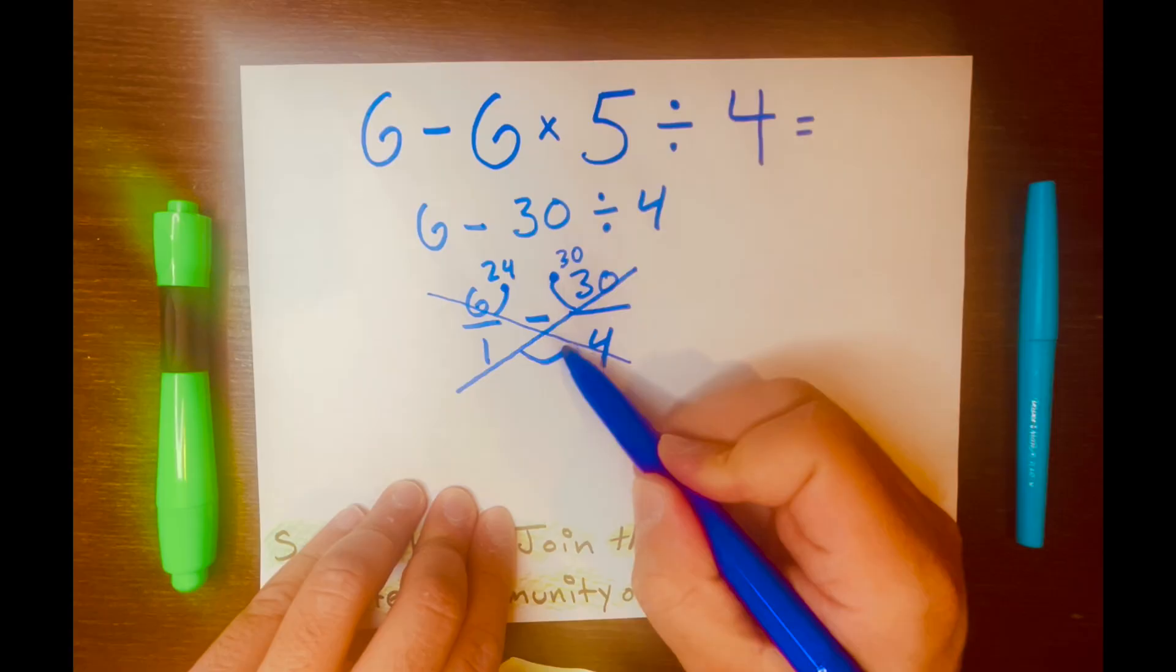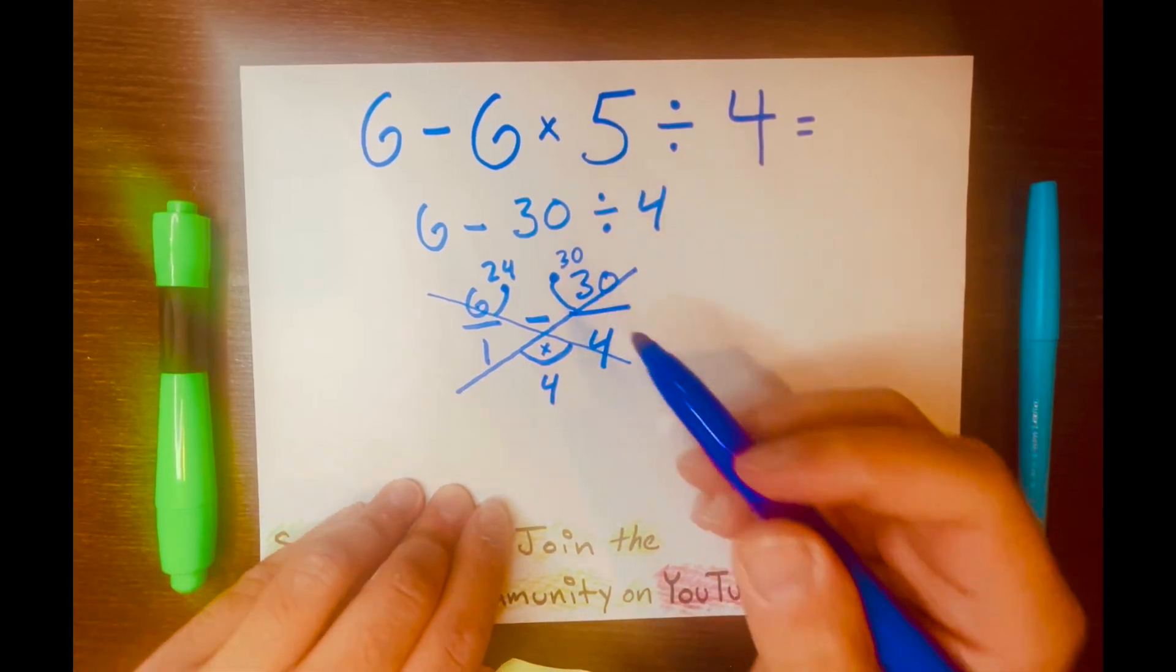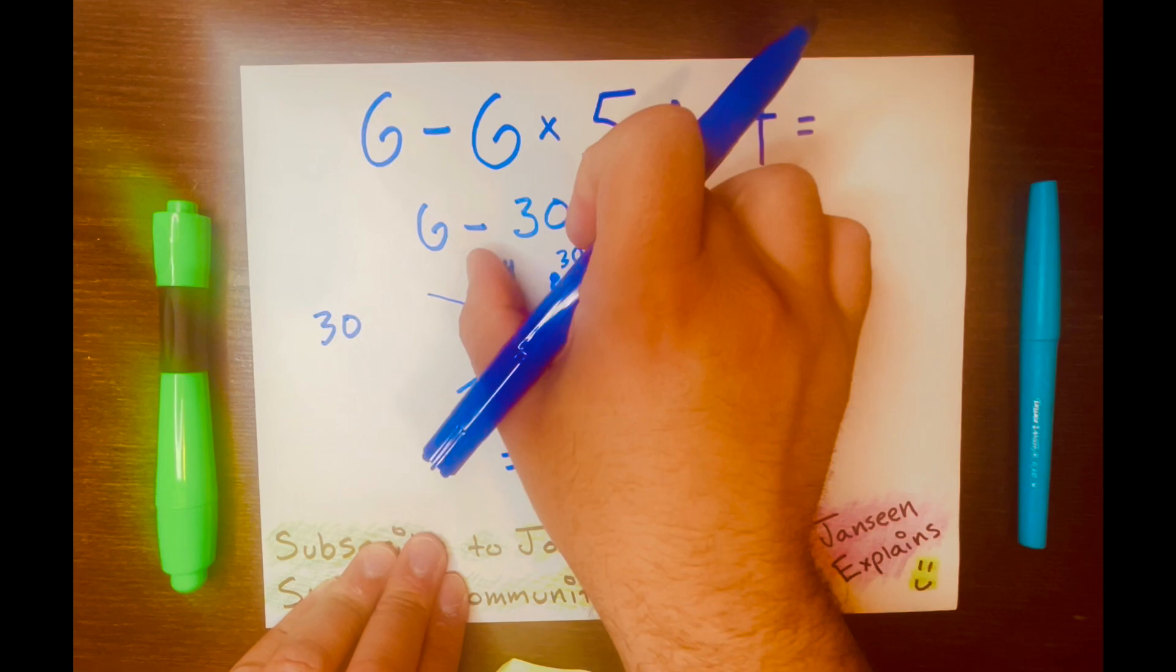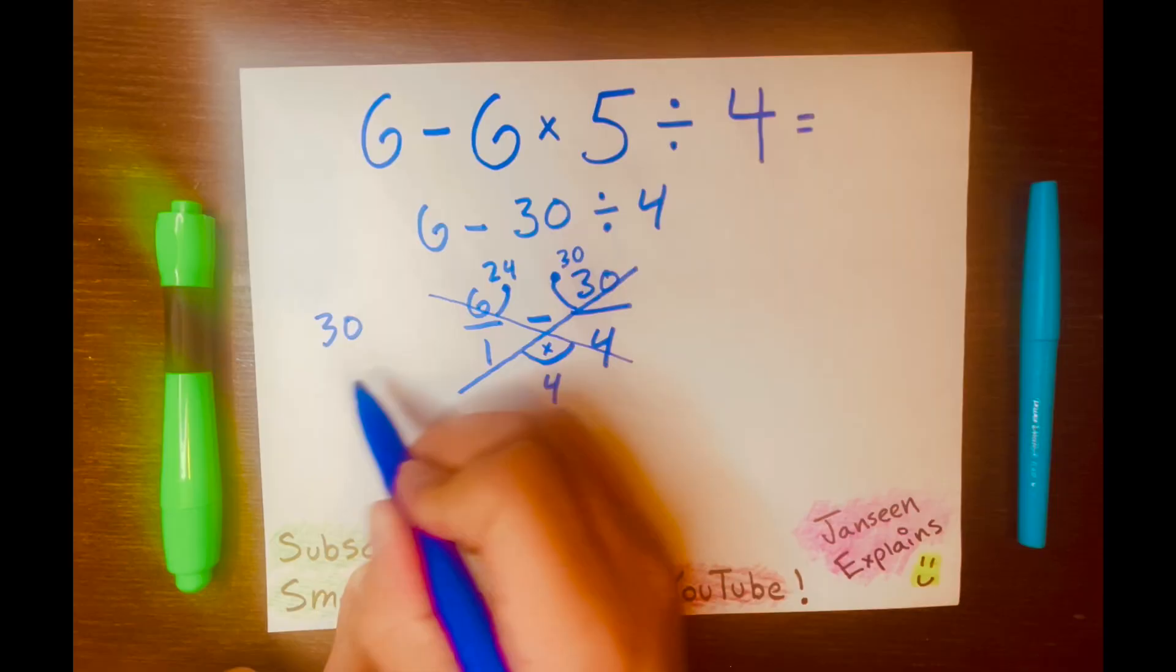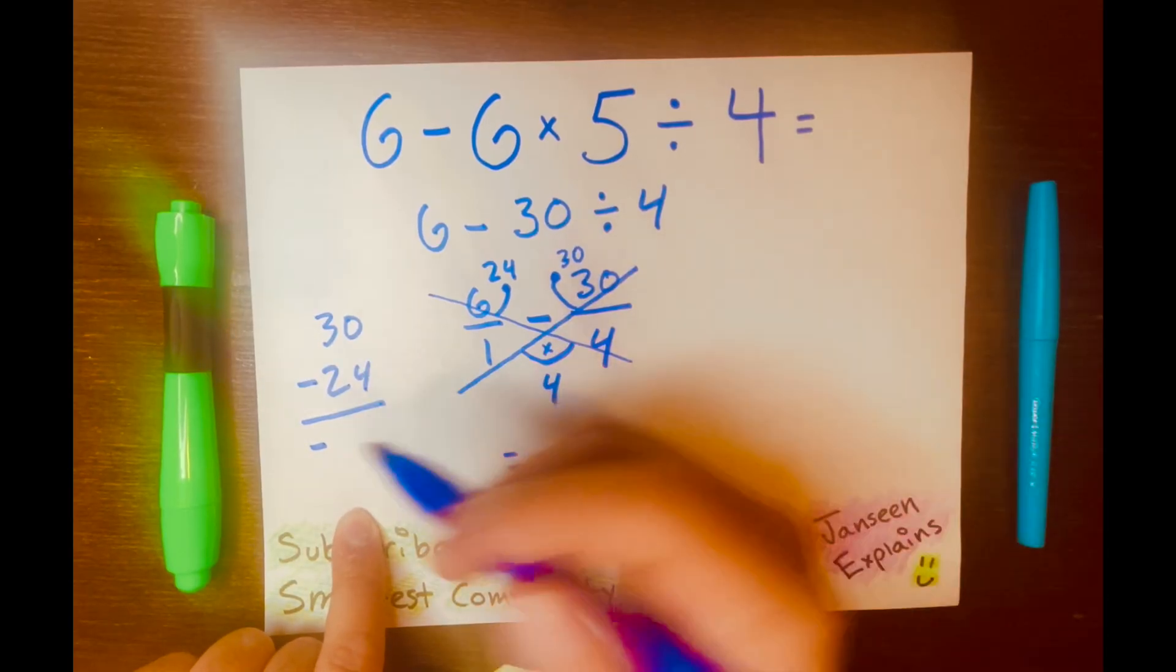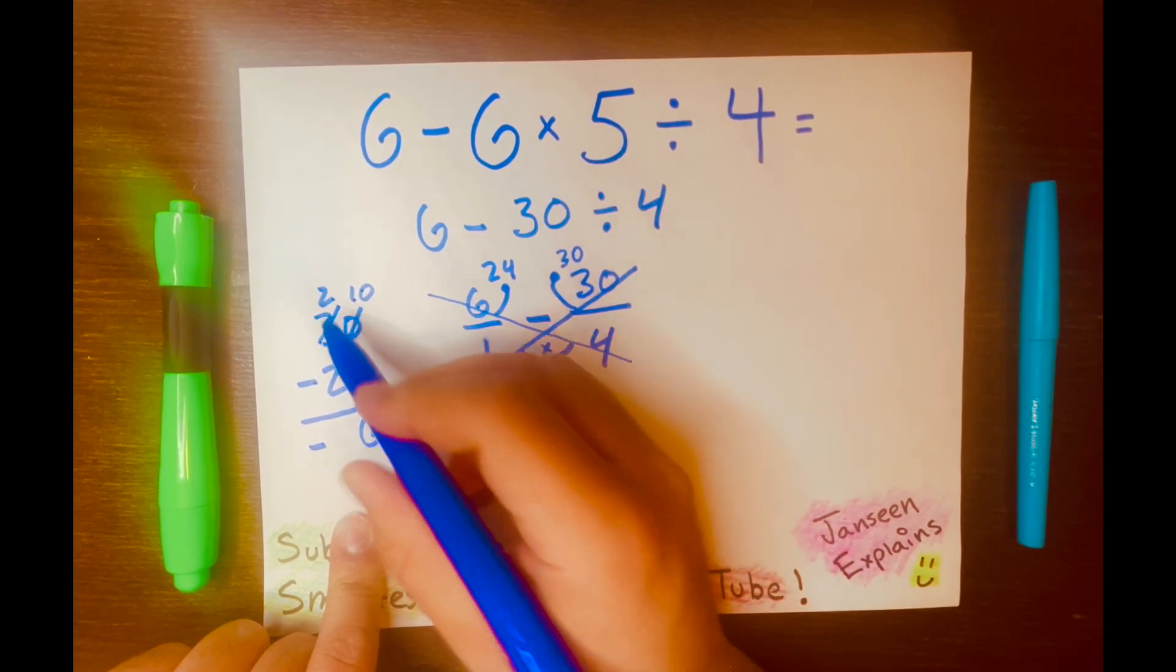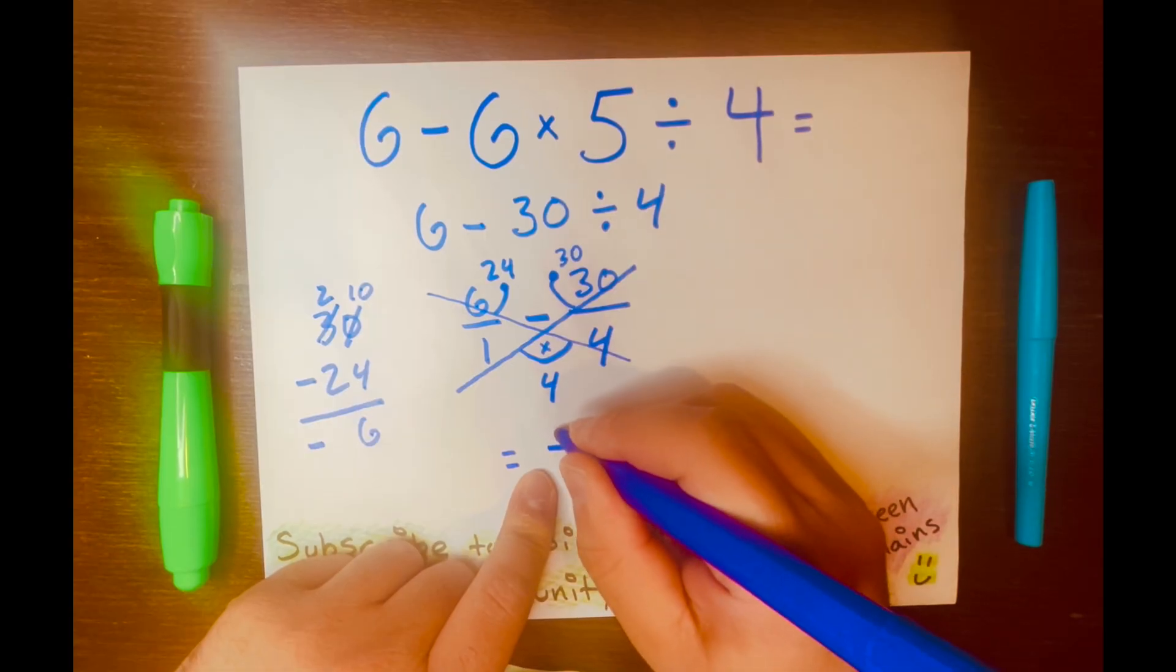And then, we draw the body. 1 times 4 is 4. Now, we're going to subtract 24 minus 30. Let's do subtraction here. Let's flip it over, or turn it around. So, it'll be 30 over 24. And we know the answer is going to be negative. And we borrow, right? It'll become 10. 10 minus 4 is 6. And 2 minus 2 is 0. So, your numerator will be negative 6.